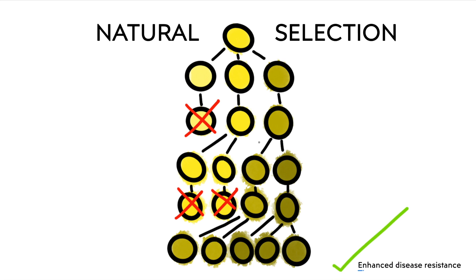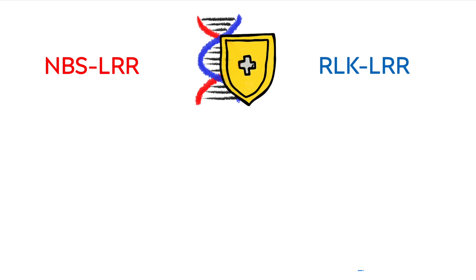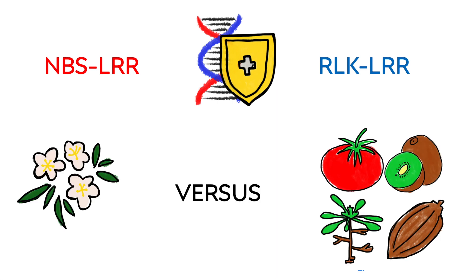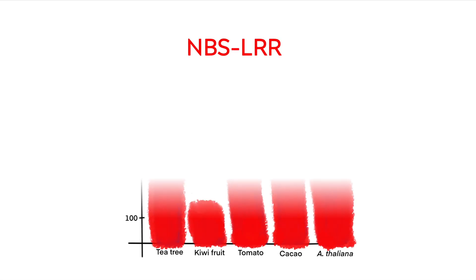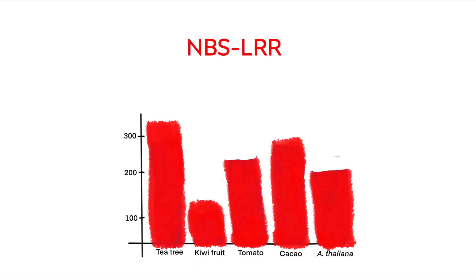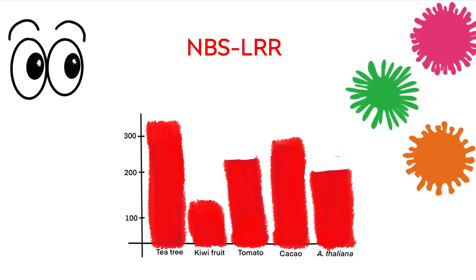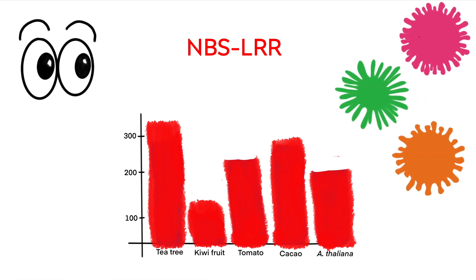This study explored defense genes, nucleotide binding sites with leucine-rich repeats and receptor-like kinase leucine-rich repeat genes in the tea tree and compared it to four other eudicots. Results show that the tea tree contained more NBS-LRR encoding genes than the eudicots. These genes actually recognize the pathogen effectors that lead to the activation of a plant defense response.